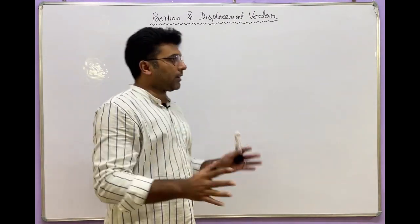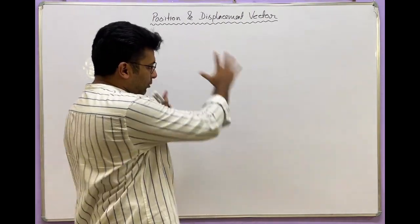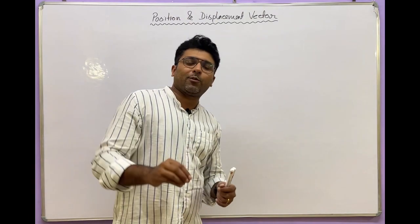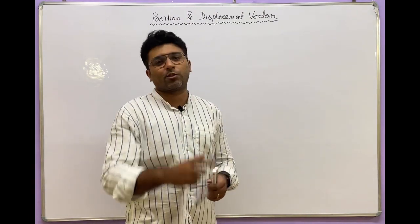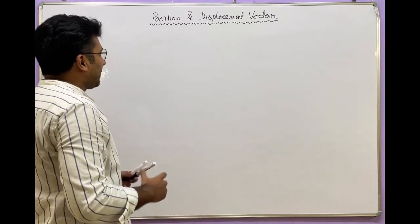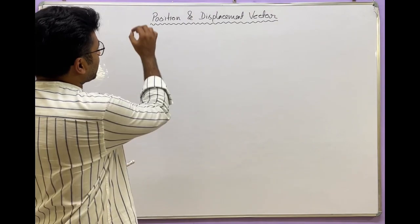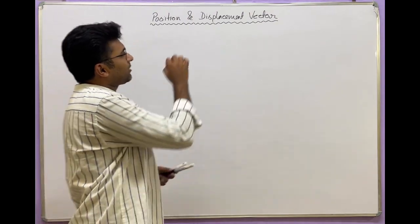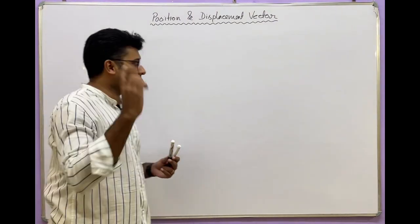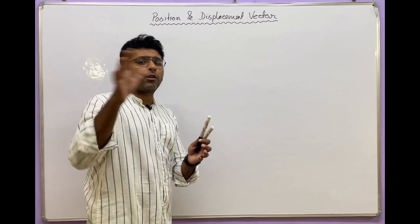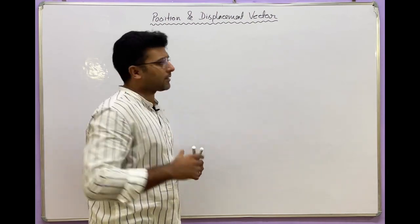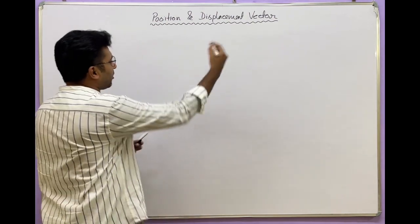I will explain the diagram first, and then I will explain the definition. So first, what is the position vector and displacement vector? I will begin with the coordinate system.